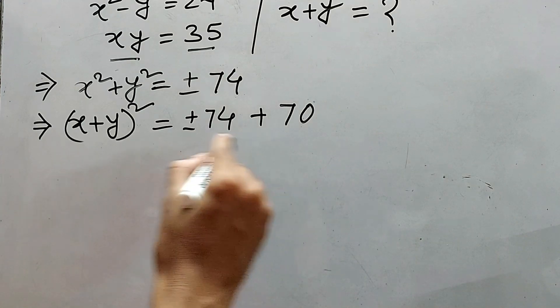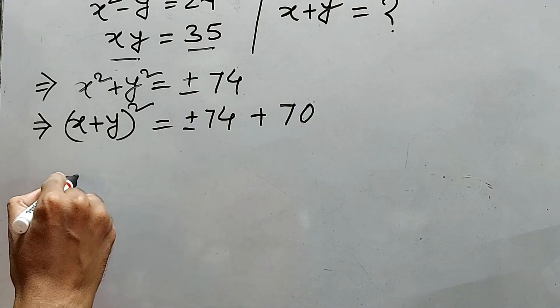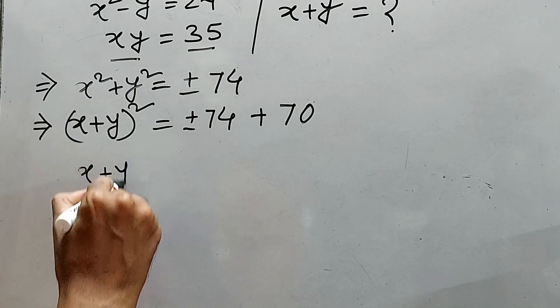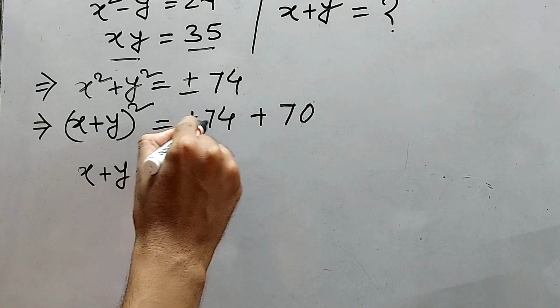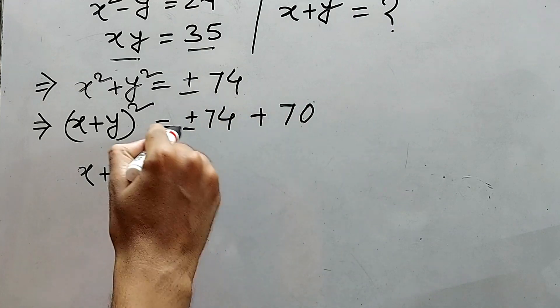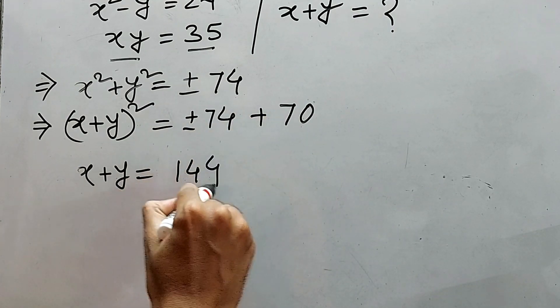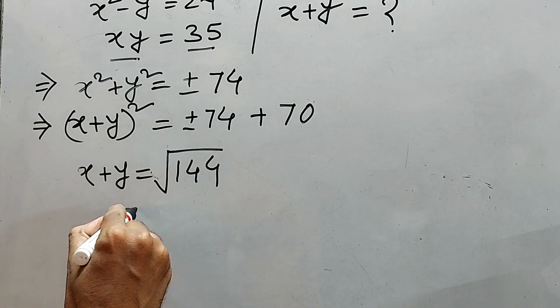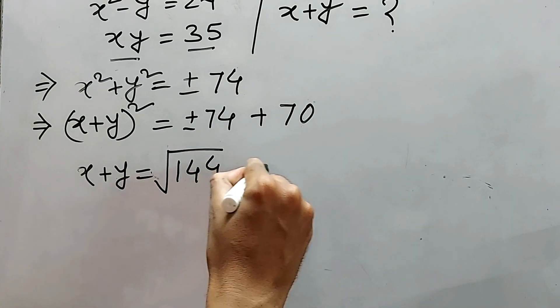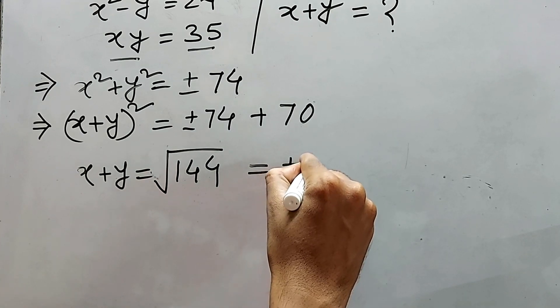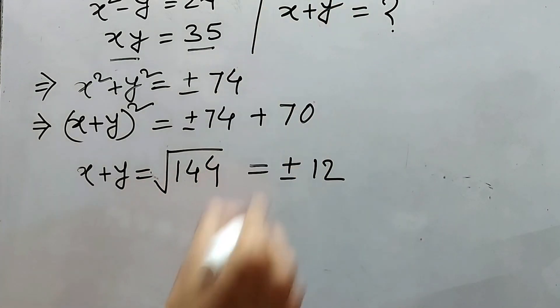Right? Well, let's take the positive value first. X plus y is equal to plus 74 plus 70. It will be 144, square root of 144. So this will be plus minus 12. This is one answer.